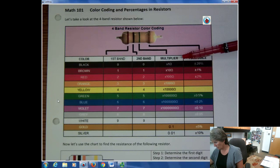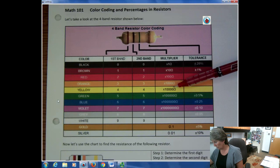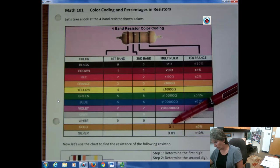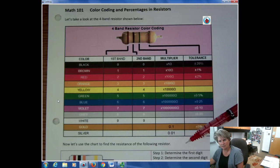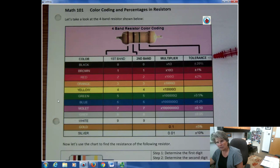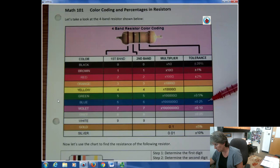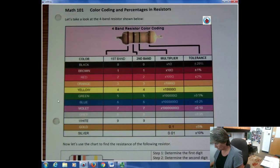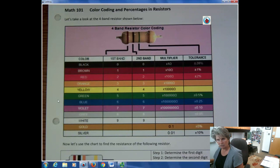The third band is a multiplier — it multiplies by some power of 10: 10 to the zero, first, second, third, fourth, fifth, sixth, or seventh power. You could also have something multiplied by 10 to the negative one power. The last band is talking about the tolerance — how much error is allowed, such as 20%, 1%, 2%, 0.5%, or 0.25%, plus or minus.